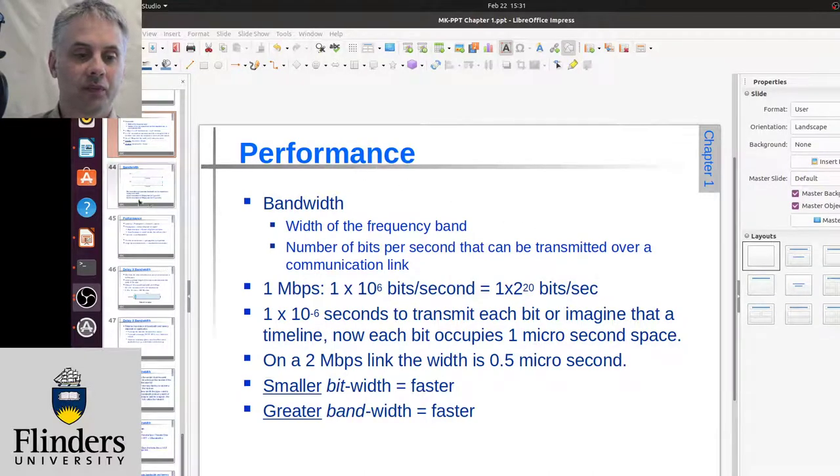So let's hop over here. The first important thing with computer networks is this concept of bandwidth, which actually refers to two different things. It can literally be the width of a frequency band—this is the original meaning of it.